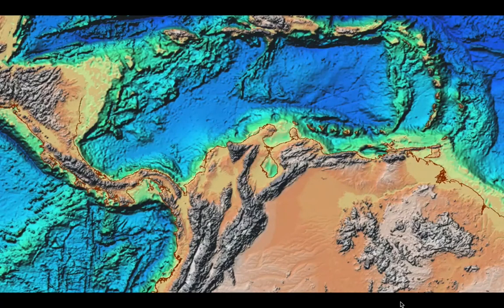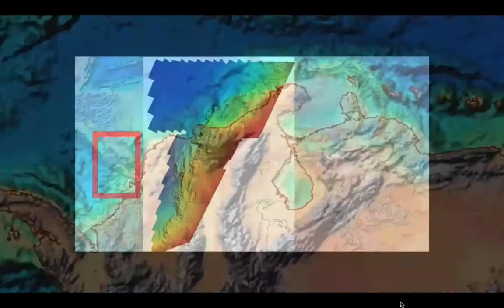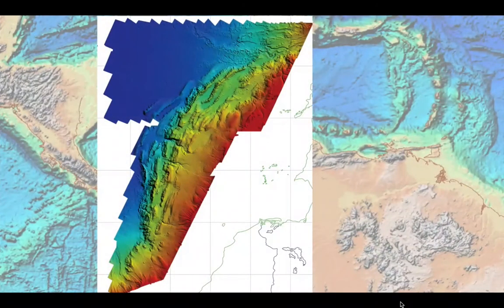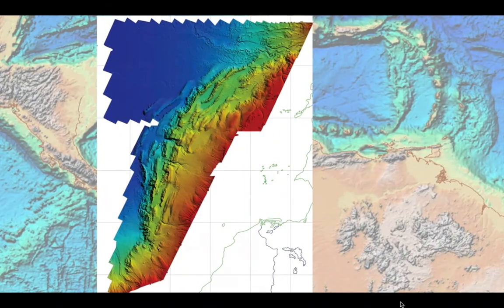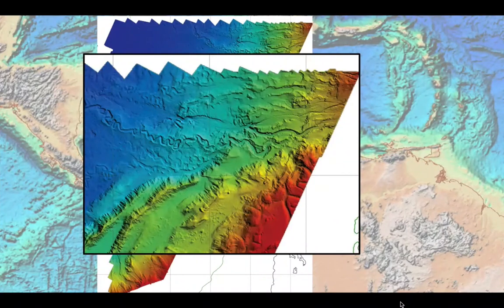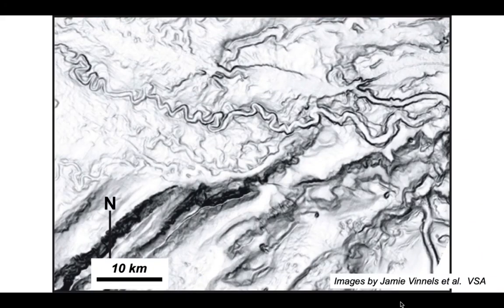Starting on the northern margin of South America, we'll look at examples from the Magdalena fan, where the Magdalena River flows out and deposits sediments on the southern flank of the Caribbean. This is a bathymetric map of the seabed - the red colours are shallow water, the darker blue colours are deeper water, so there's a general increase in bathymetry from right to left. Taking away the bathymetry and just looking at the gradients on the seabed, the darker colours show steeper gradients. We can see these sinuous channel forms meandering their way across the seabed.